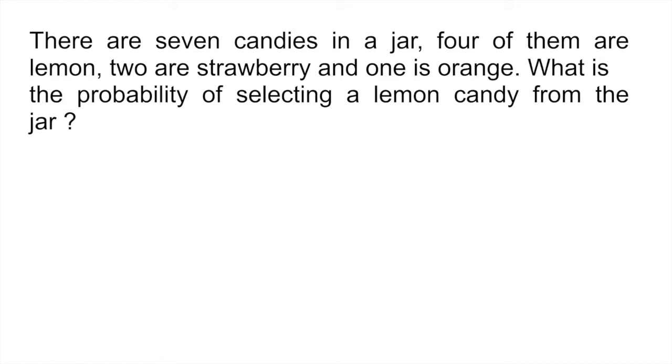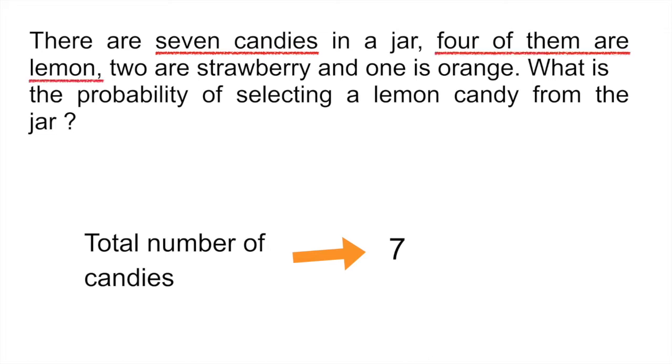So as always folks, step by step. So first thing, how many candies do we have in the jar? We have seven candies. Total number of candies is seven. And then let's find out how many lemon candies we have. It says four of them. So if you wanted to find out the probability, then all you have to do is divide the number of lemon candies, which is four, by the total number of candies. And that would give you 57%. So every time you stick your hand in that jar, you have a 57% chance of getting a lemon candy.